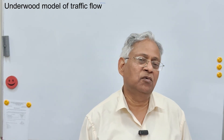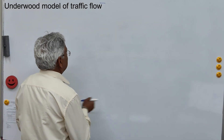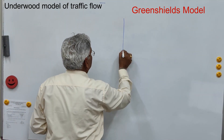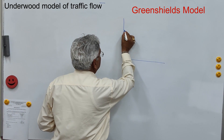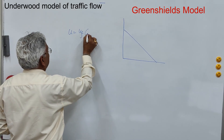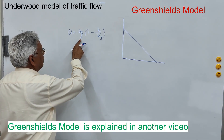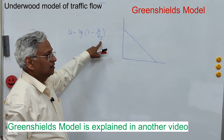Hello friends. Today we will be discussing the Underwood model of traffic flow. In my two earlier sessions, I have discussed the Green Shield model which assumes a linear relationship between speed and density. That is u equals uf into 1 minus k upon kj, where uf is the free flow speed and kj is the jam density.